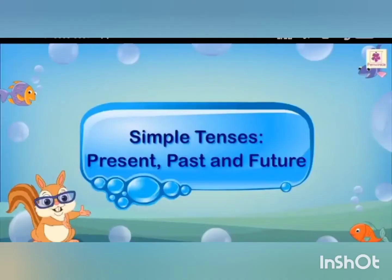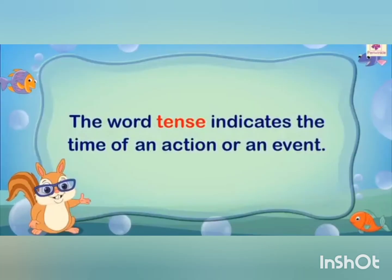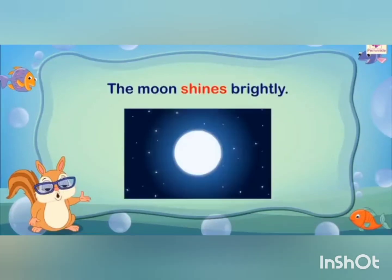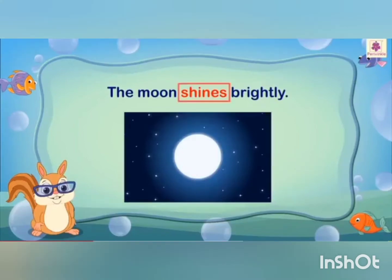There are three major tenses, namely the present tense, the past tense, and the future tense. The word tense indicates the time of an action or an event. For example, the moon shines brightly. In this sentence, the verb 'shines' indicates an action in the present.